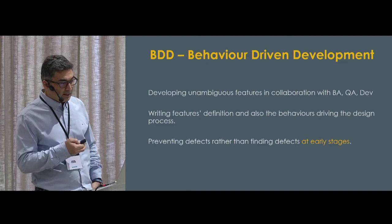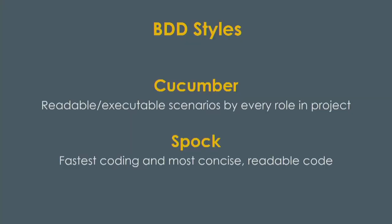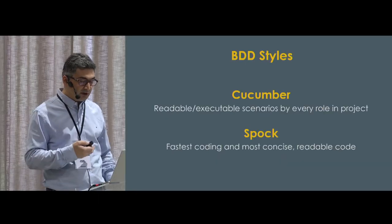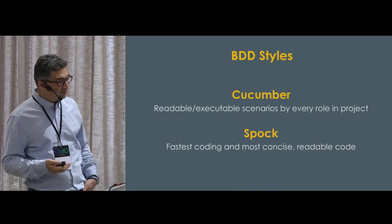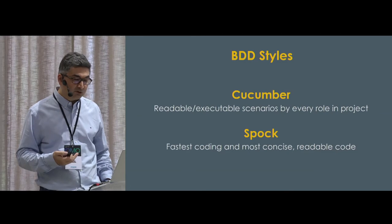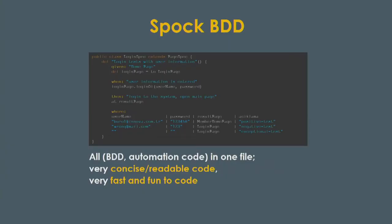BDD is a preventative test methodology. It's an acceptance test and end-to-end test activity. There are many different BDD frameworks — Cucumber and Spock are the ones I mainly talk about; I have experience with them. Cucumber: readable, executable scenarios by every role in the project. Spock: fastest coding and most concise, readable, in one file. You write the given-when-then behaviors here — here is your test case: given precondition, when action, then expected result. Data-driven programming is used here and executes three times. You write documentation that every role in the project can understand.